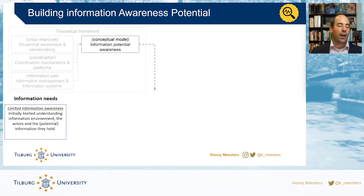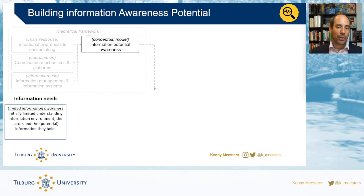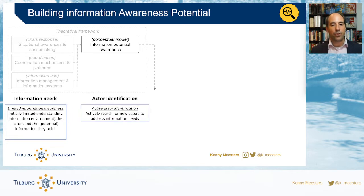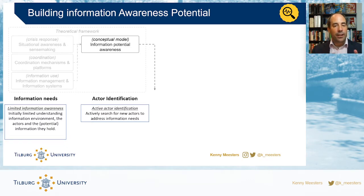The first step in this process is to find what information you need — introspectively looking at your own organization to determine what information might help you make better decisions. This is your own information needs. The second step is to start finding out these other actors, these other people that have the information.